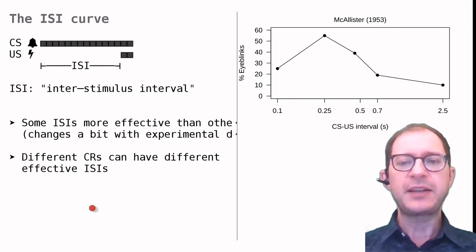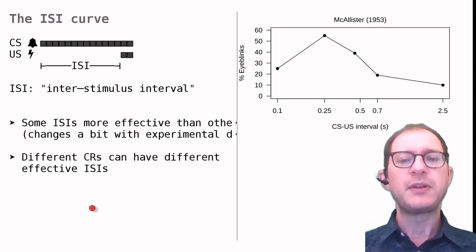The details of the ISI curve change a bit depending on how you do the experiment, for example, which CS and US you use, but in each experiment you find an ISI that is more effective than others. If you change the behavior that is conditioned, however, the ISI curve can change a lot.